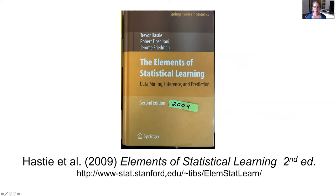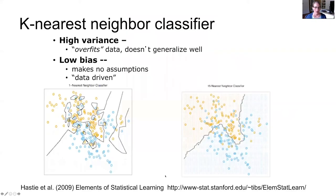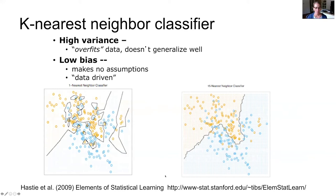They describe a continuum of types of statistical learning models. These range from models that don't make a lot of strong assumptions about the data-generating processes or the form of the model being estimated, but learn from the data in a very simple way — for example, the K-nearest neighbor classifier. In this example, the blue and gold circles represent observations of two different classes.